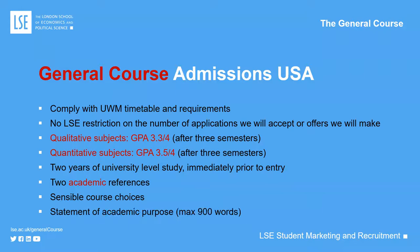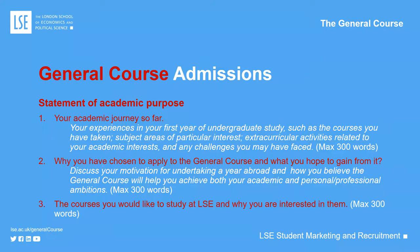Alongside all of that, a Statement of Academic Purpose — just 900 words. We ask three questions: tell us about your academic journey to reach where you are now; tell us why you've chosen to apply to the General Course and what you hope to gain from it; and tell us about the courses you'd like to study and why you're interested in them. This is very much about academic motivation — not a personal statement about your likes, dislikes, hobbies, and interests.